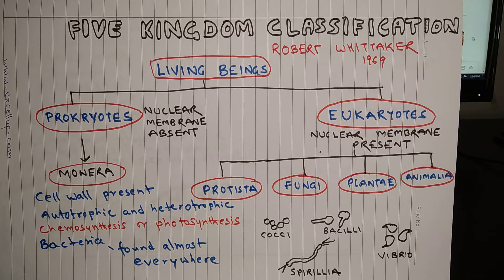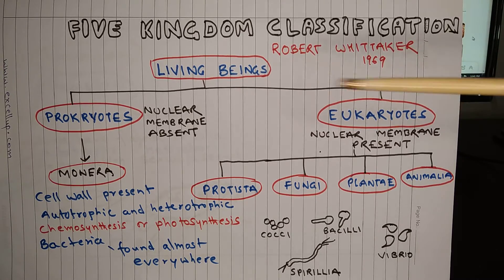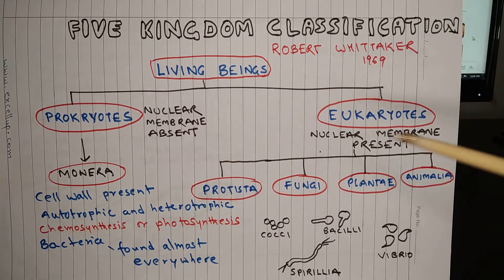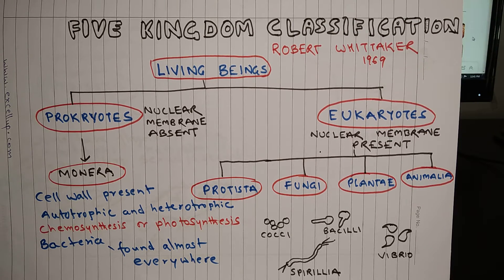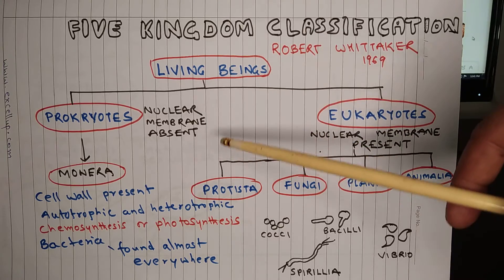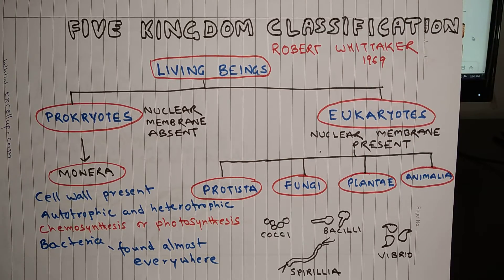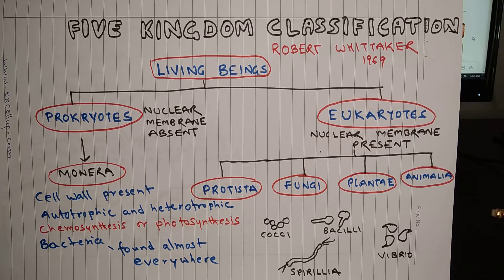Before going into details of these kingdoms, let us divide living beings on the basis of the structure of the nucleus. There are two groups: prokaryotes and eukaryotes. In prokaryotes, the genetic material is not organized and is not membrane bound, so nuclear membrane is absent. In eukaryotes, genetic material is bound by the nucleus, so nuclear membrane is present. Kingdom Monera comes under prokaryotes and the rest of the kingdoms come under eukaryotes.